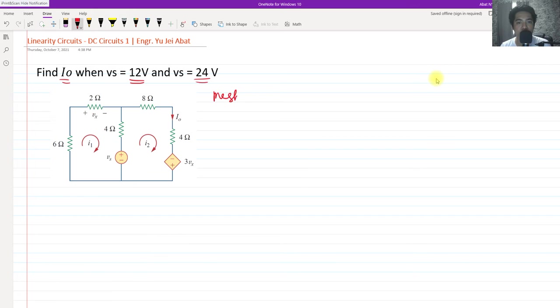We're going to use mesh analysis here to first identify the mesh currents I sub 1 and I sub 2. For mesh equation 1, we have 6 plus 2 plus 4, that is 12 I sub 1 positive. And then 4 ohms is being shared by the two meshes. So in the view of mesh 1, that would be negative 4 I sub 2. And again, since mesh 1 is rotating in this direction clockwise, it enters the positive voltage side of V sub S. Therefore, we have V sub S equals 0.